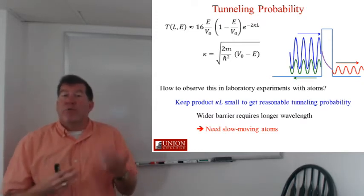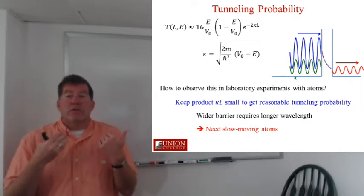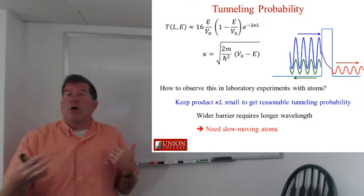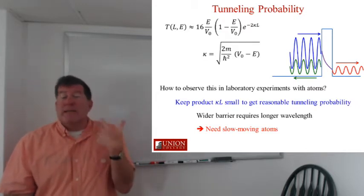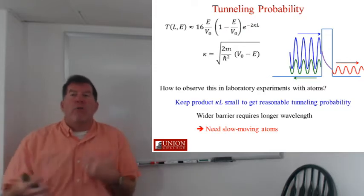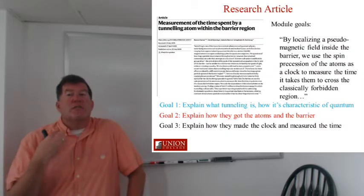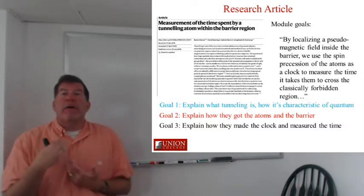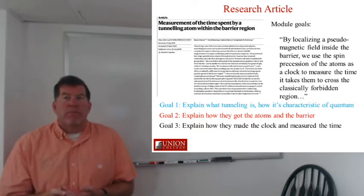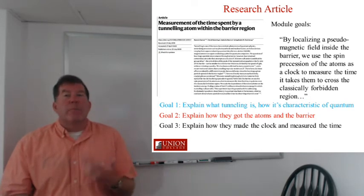That's what we learned from the de Broglie relationship between momentum and wavelength, that the slower the atoms are moving, the longer the wavelength associated with them. This brings us around to the second goal that we want to address in talking about this research article, which is explaining how do they get the atoms that they use for their experiment, and how do they make the barrier that those atoms then tunnel through? That's going to involve talking about how to make things cold.